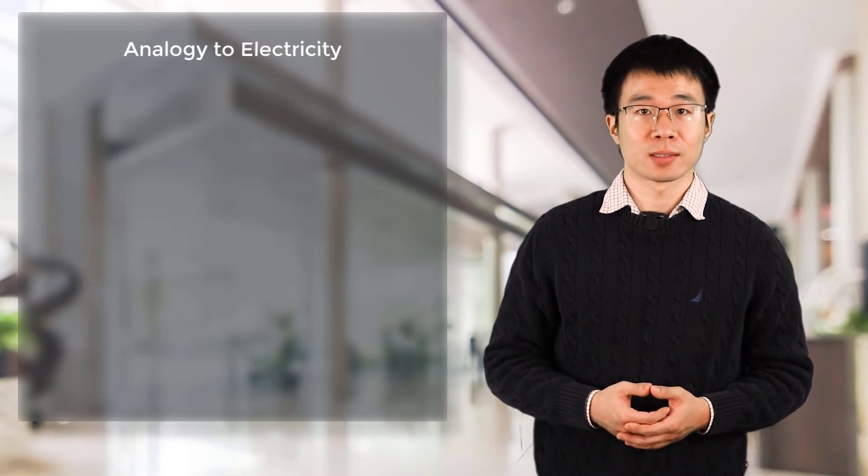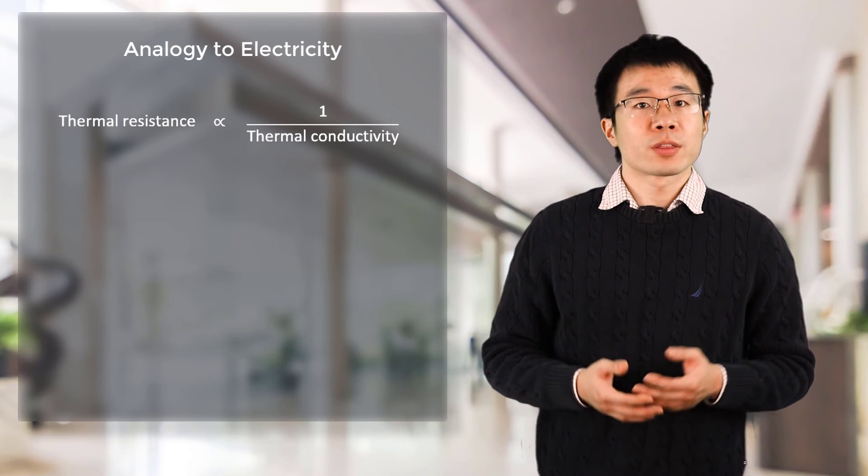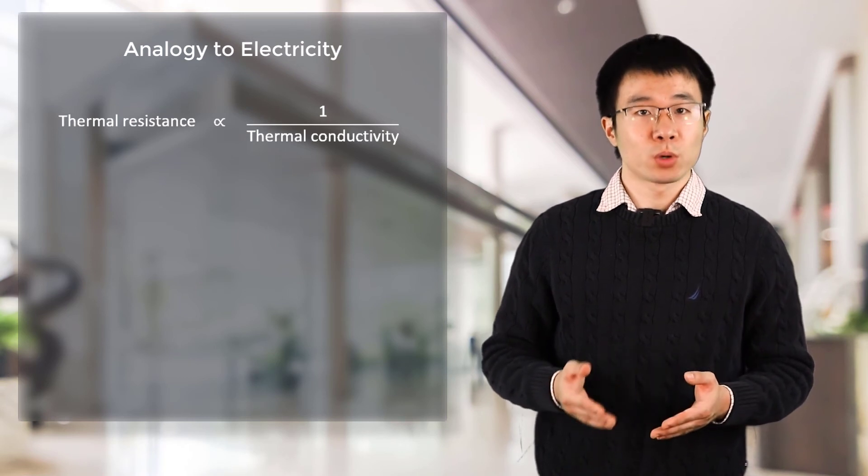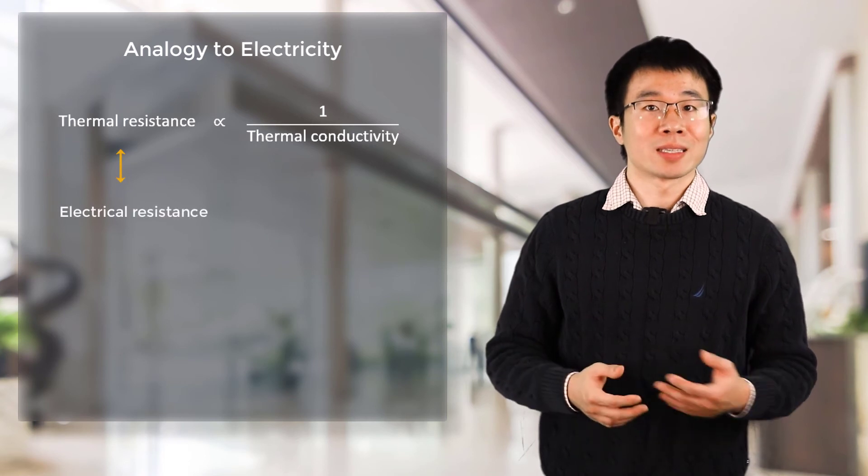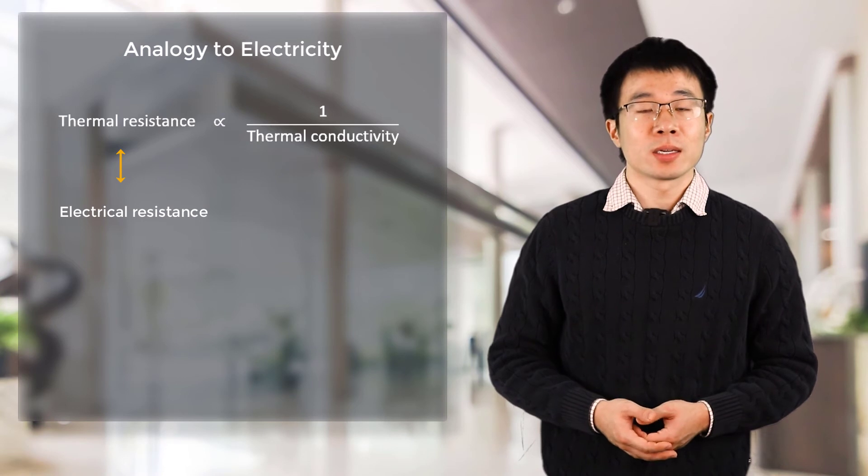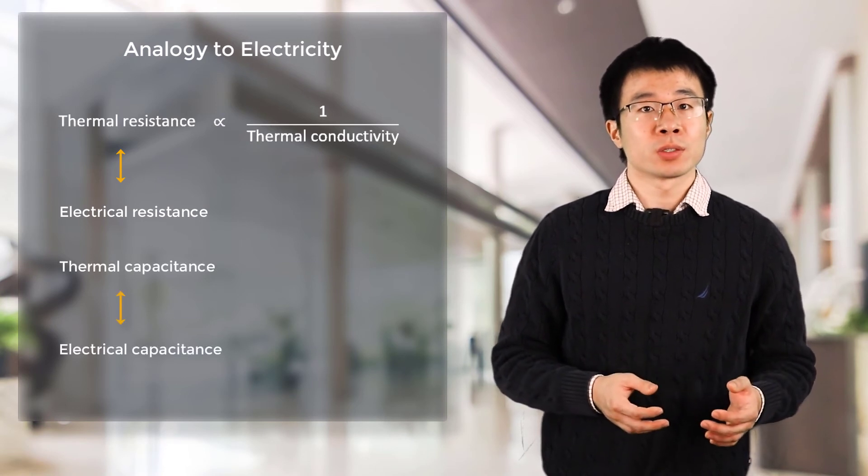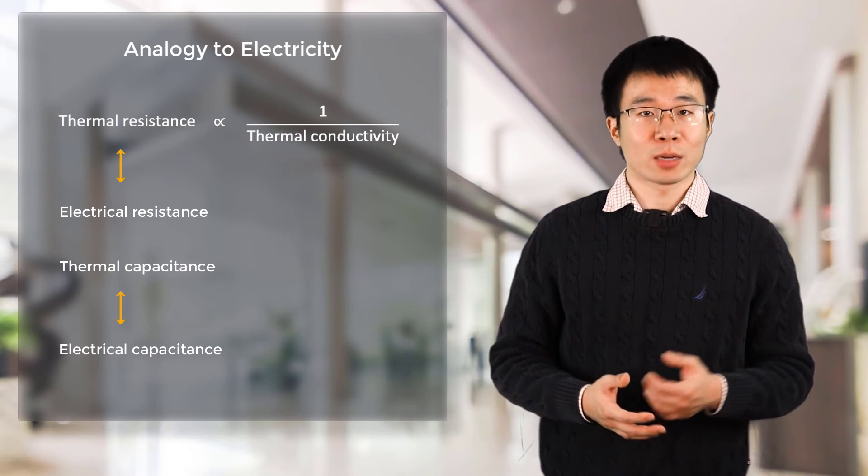Let's see how an electric analogy can be drawn for a transient thermal analysis. Recall in the steady state thermal analysis lesson, the thermal resistance is inversely proportional to the thermal conductivity. And this thermal resistance is analogous to electrical resistance. Similarly, in transient analysis, we can relate the thermal capacitance to electrical capacitance, which represents the storage of electrical charge.